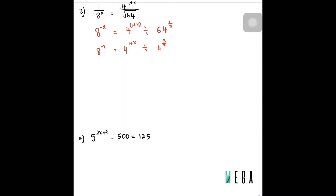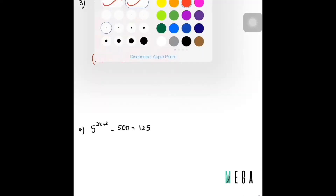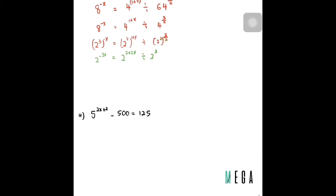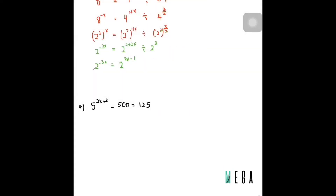Very simple — I can write everything as powers of 2: 2^(3·(−x)) equals 2^(2·(1+x)) divided by 2^(2·(3/2)). So I reduce everything to base 2, giving 2^(−3x) equals 2^(2+2x) divided by 2^3. Finally, combining the right-hand side powers of 2 gives 2^(2+2x−3) = 2^(2x−1). Both sides share the same base, so I get −3x = 2x − 1.